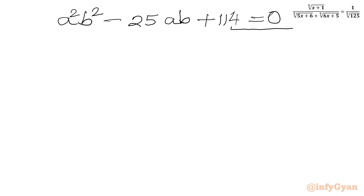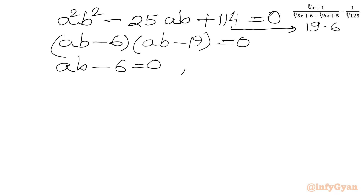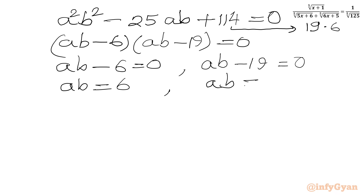I can see the factors of 114 as 19 times 6 — if I add both I get the middle term 25. So using the factorization method, we write (ab minus 6)(ab minus 19) equals 0. From here, either ab minus 6 equals 0 or ab minus 19 equals 0. So ab equals 6 or ab equals 19.